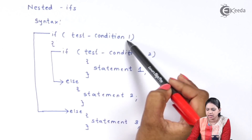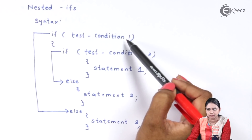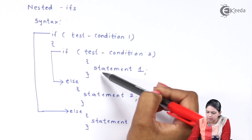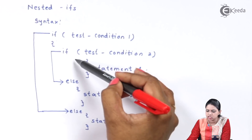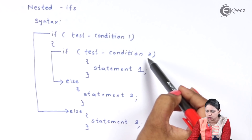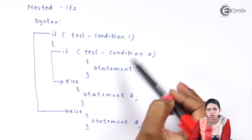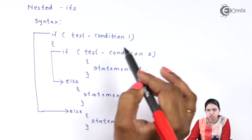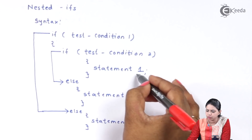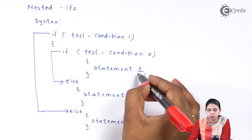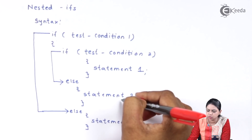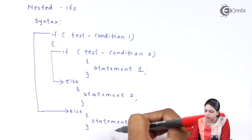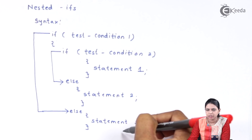If test condition 1 is true, you will jump inside and check whether test condition 2 is true or not. If test condition 2 is true, you execute statement 1; else you execute statement 2. If test condition 1 is false, you execute statement 3.